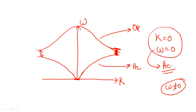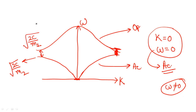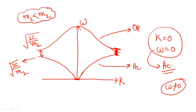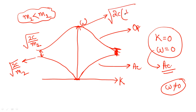The next point: the maximum value you are getting for the group velocity in the acoustical branch is root of 2c upon m2, whereas in the optical branch it will be root of 2c upon m1. Here m1 is the lighter atom's mass and m2 is the heavier atom's mass. The value of omega at the peak of the optical branch will be equal to root of 2c times (1 upon m1 plus 1 upon m2). This is the omega max in the case of the optical branch.